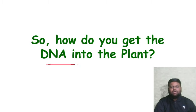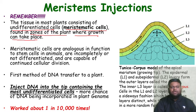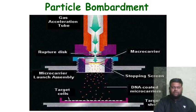To get DNA into a plant, the first method is meristem injection. Based on the tunica-corpus model of the meristem, tissue in most plants consists of undifferentiated meristematic cells found in zones where growth takes place. Meristematic cells are analogous in function to stem cells in animals — they are incompletely differentiated and capable of continued cellular division. DNA is injected into the meristem tip containing the most undifferentiated cells, giving a greater chance of DNA being incorporated into the plant genome.